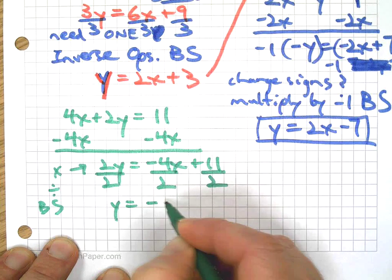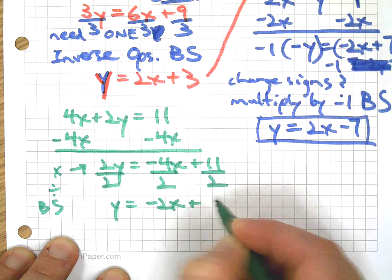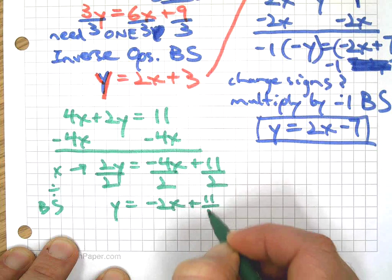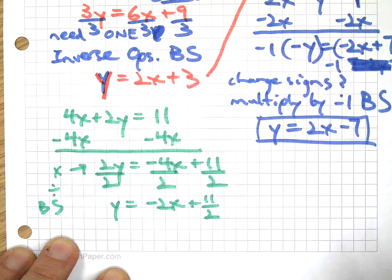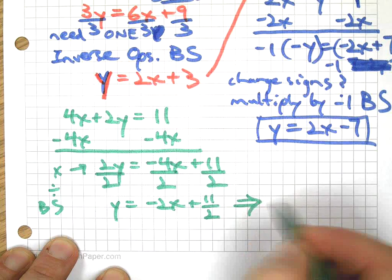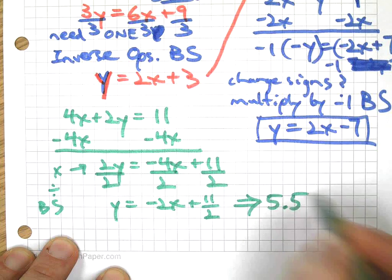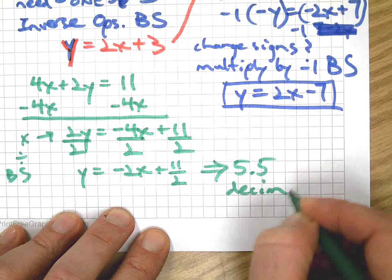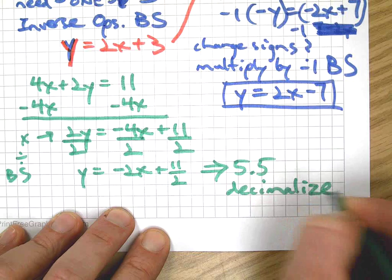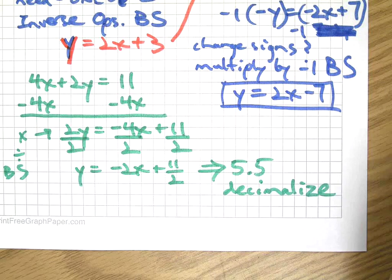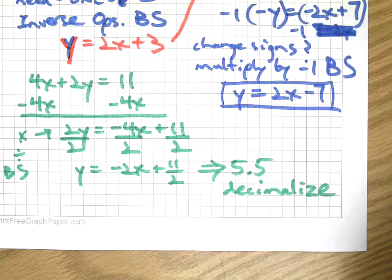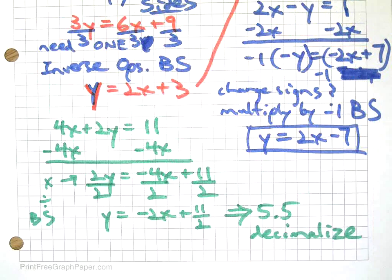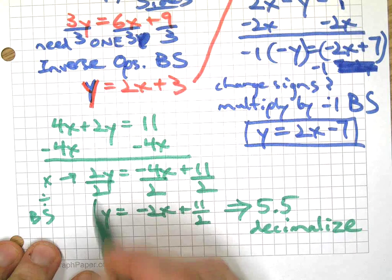And what we end up with is y equals negative 2x plus 11 halves. I'm just going to leave it like that. You could call this 5 and a half if you want to, decimalize it. There we go, vocab word of the day. Change something into a decimal. That's not a real word, but hey, it's kind of fun. Decimalize it.